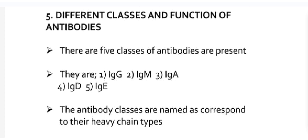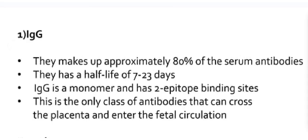Now we will see the different classes and functions of antibodies. There are five classes of antibodies present: they are IgG, IgM, IgA, IgD, and IgE. The antibody classes are named by their heavy chain types.